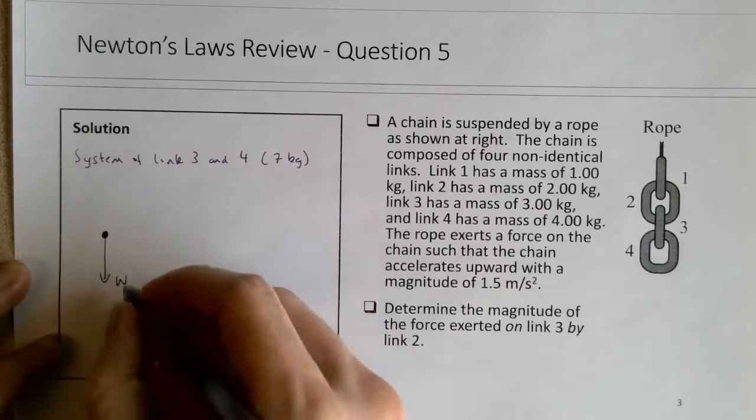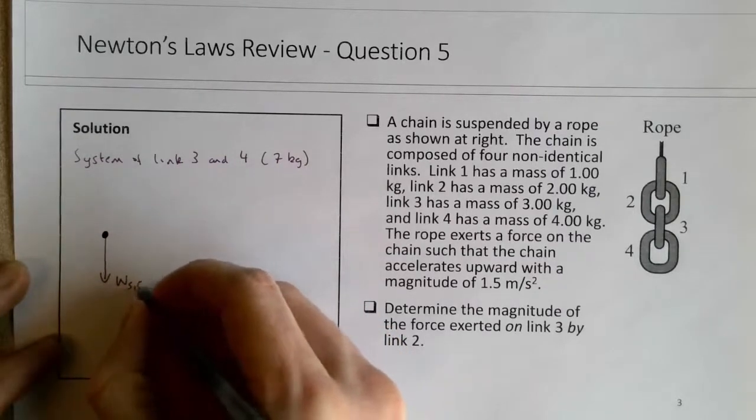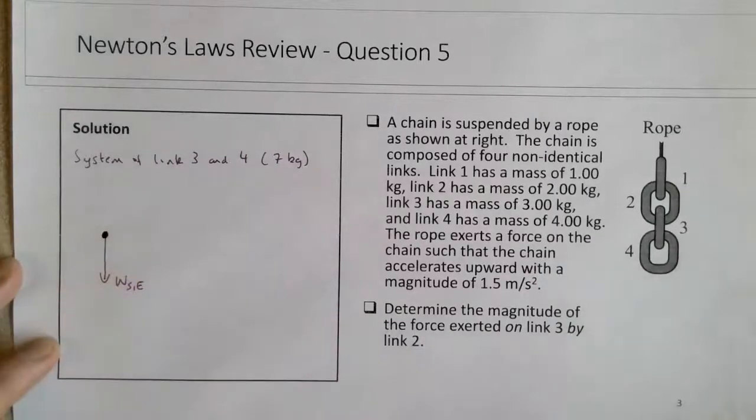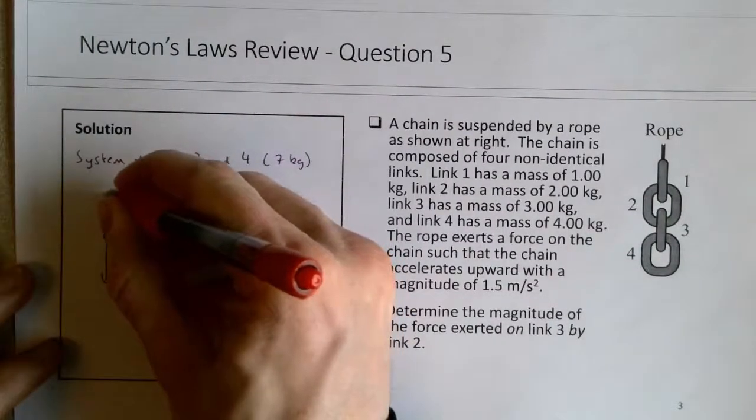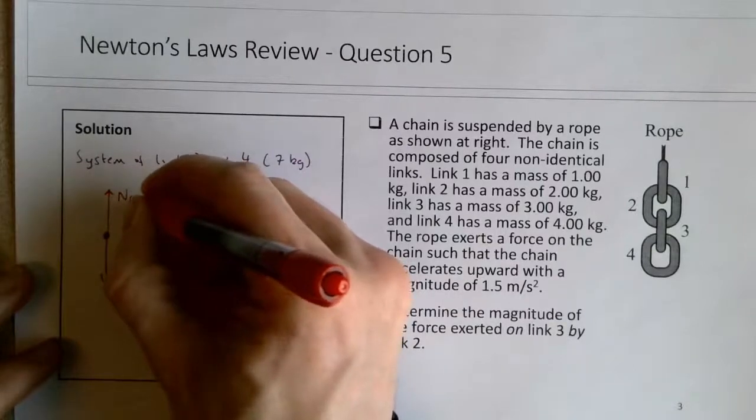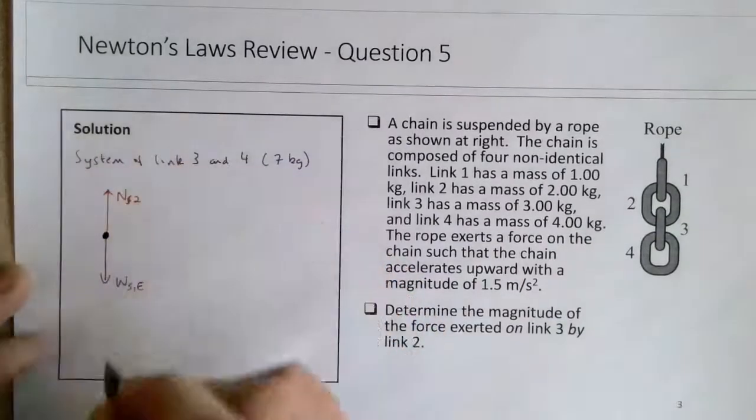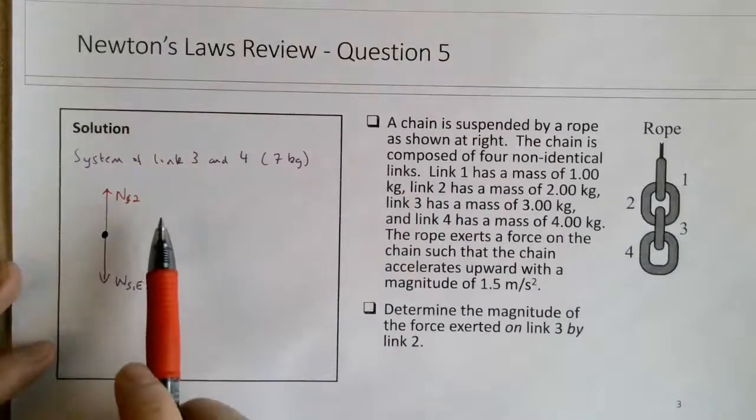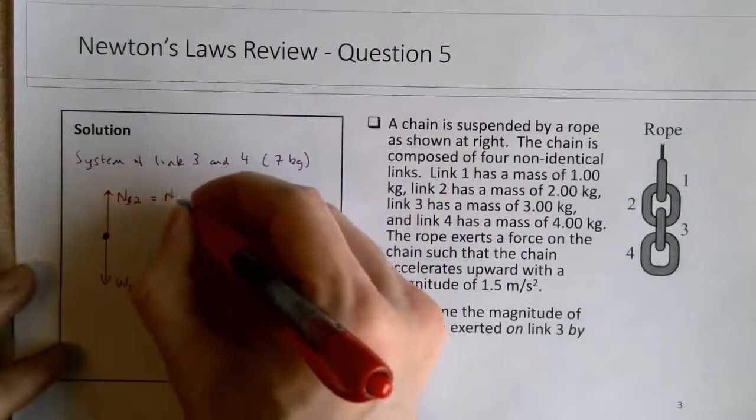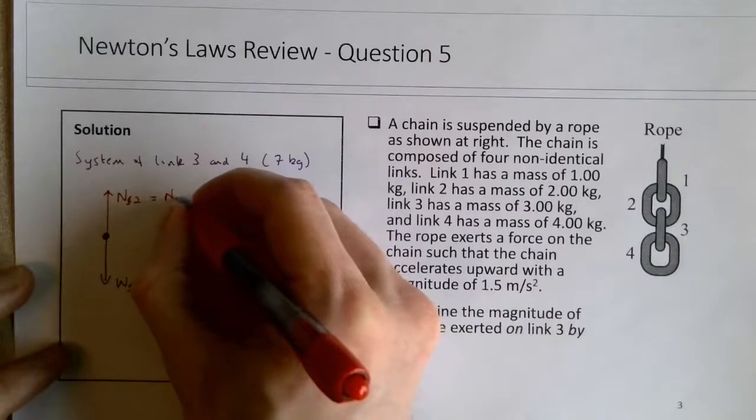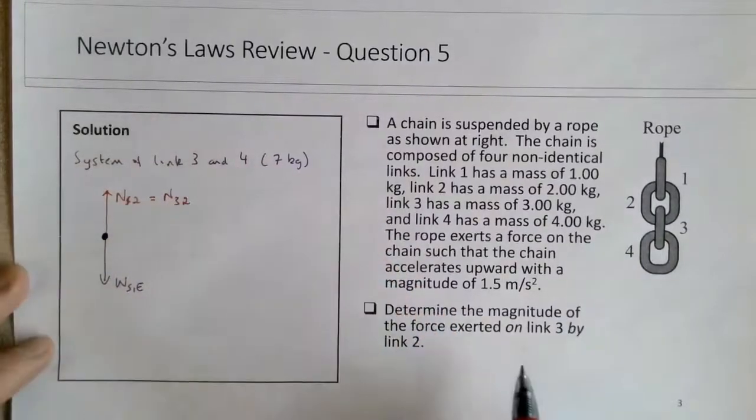I'll just use S for system by the earth, and then there would be an upward force, there would be a normal force on the system by link 2. And then this normal force on the system by link 2 is equivalent to the normal force on link 3 by link 2, which is what we're trying to solve for, to determine this magnitude.